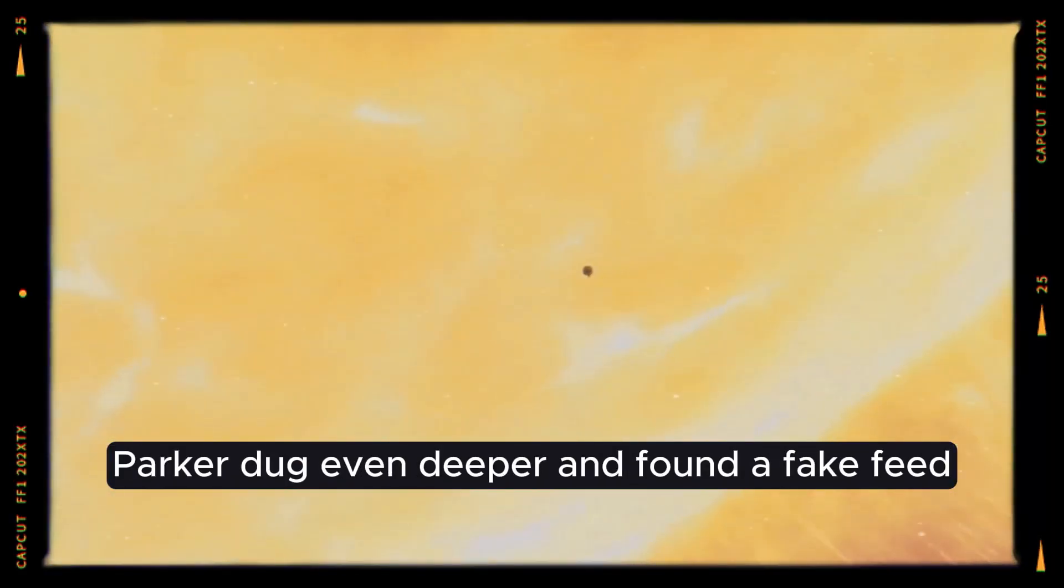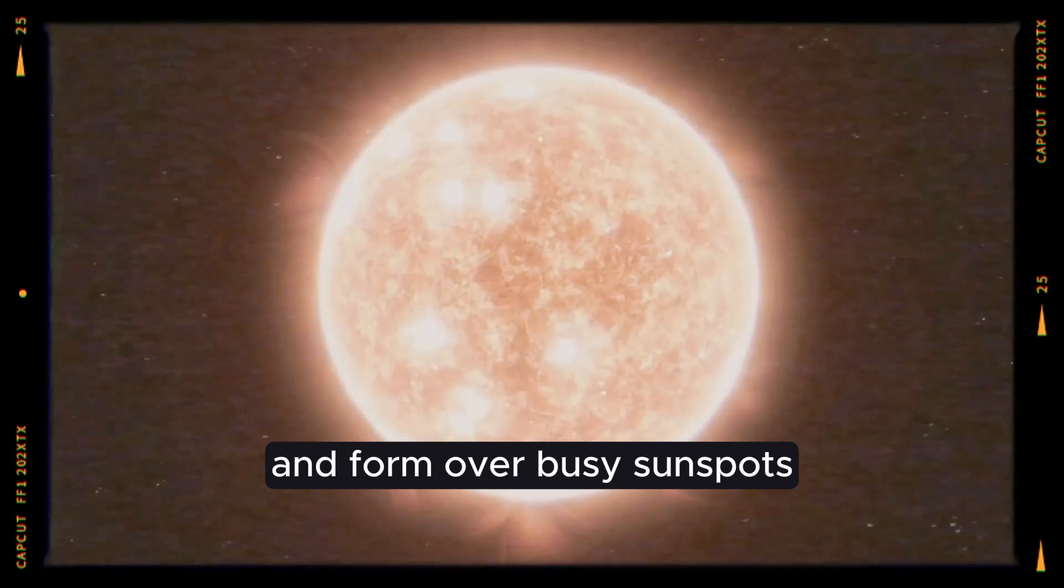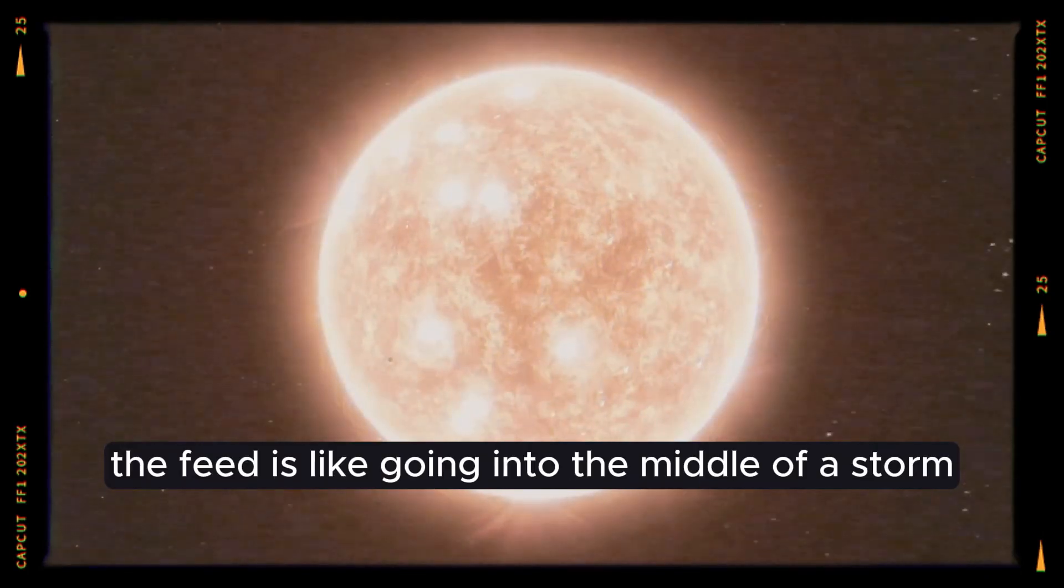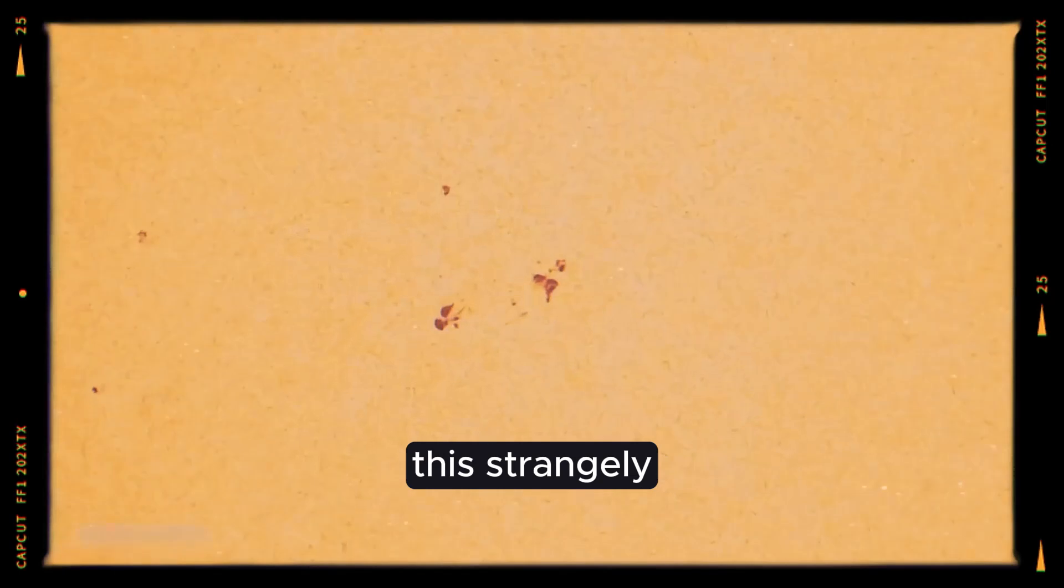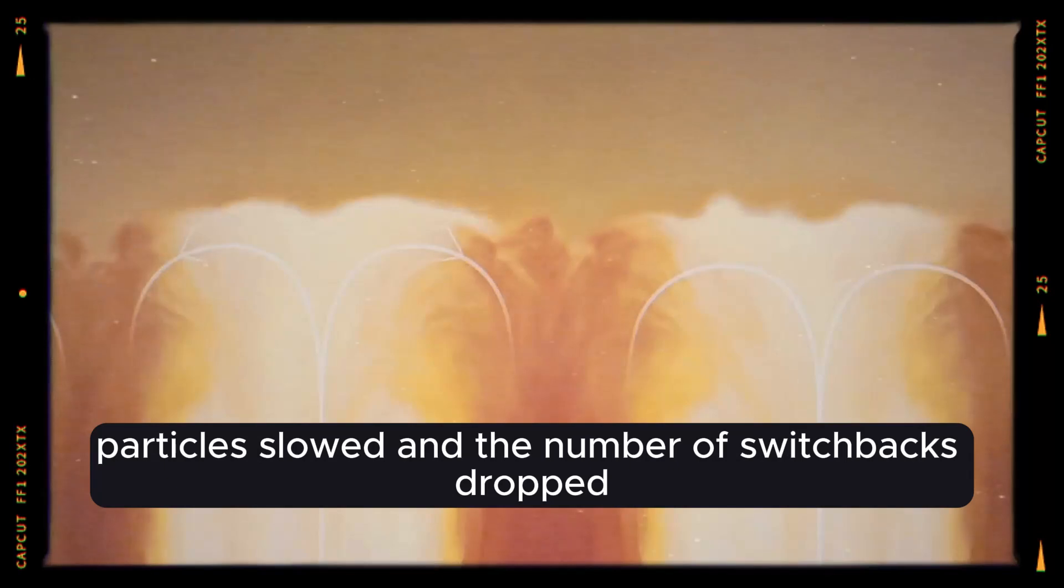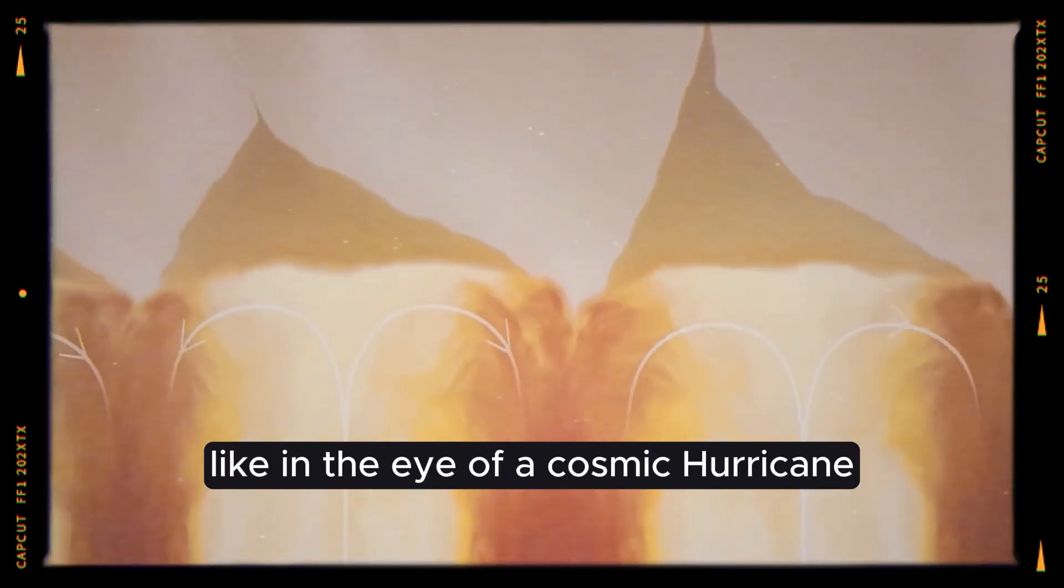Parker dug even deeper and found a pseudostreamer. These bright structures that look like loops and form over busy sunspots. NASA says the pseudostreamer is like going into the middle of a storm. This strangely vivid description fits Parker's experience to a T. The sun's conditions calmed, particles slowed, and the number of switchbacks dropped like in the eye of a cosmic hurricane.